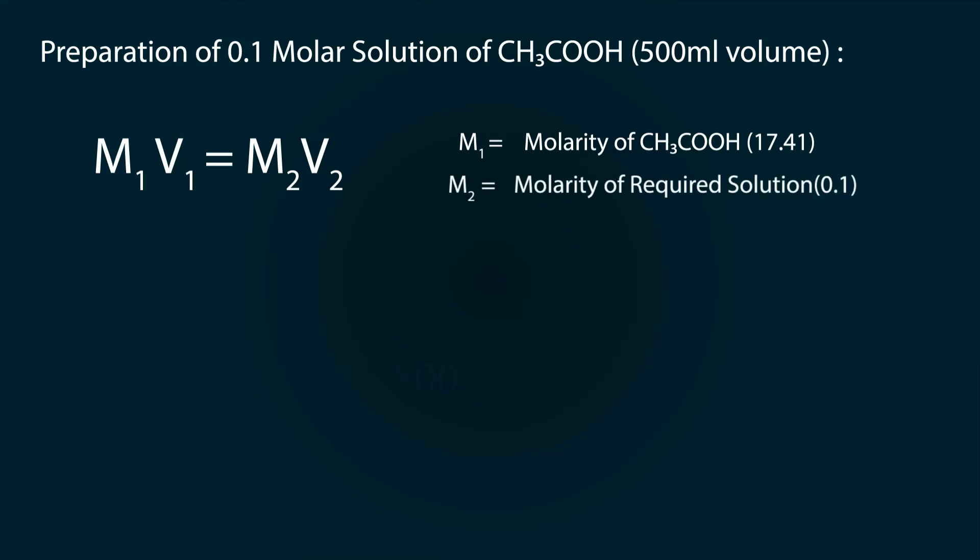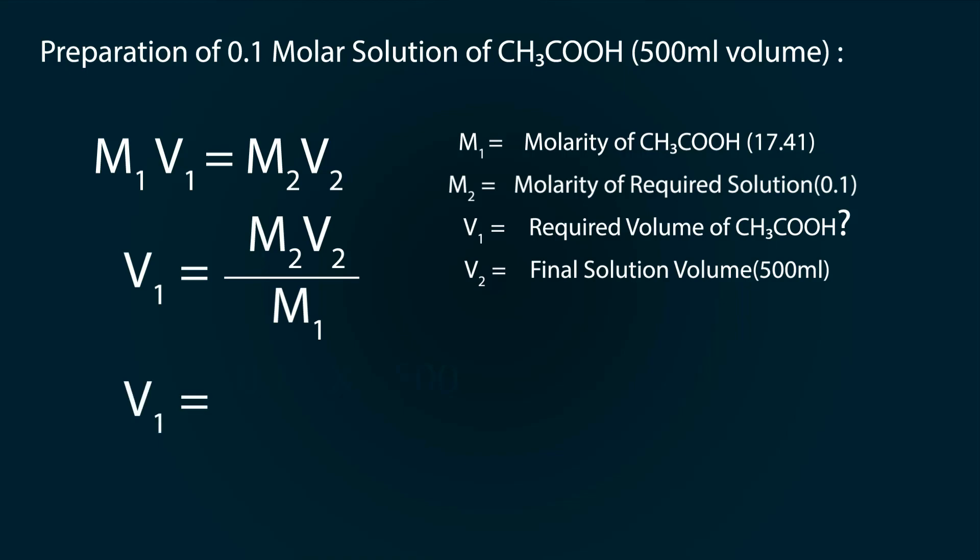V1 is the volume of acetic acid of 17.41 and V2 is our final volume which is 500 ml. Now we arrange the formula and put the values. By putting values we get our volume V1 as 2.87 ml.